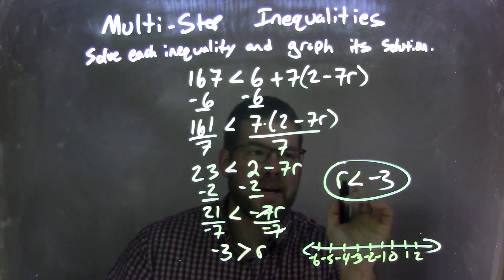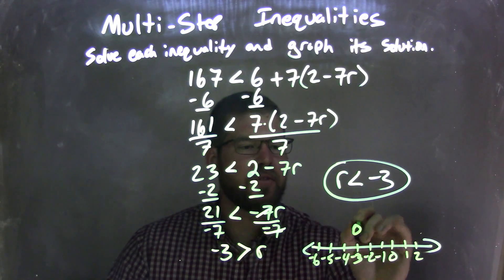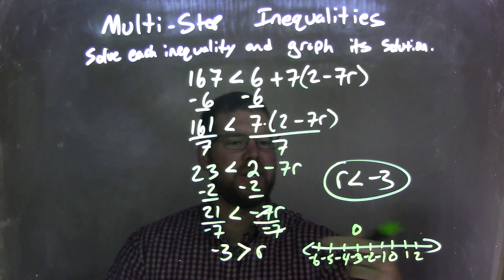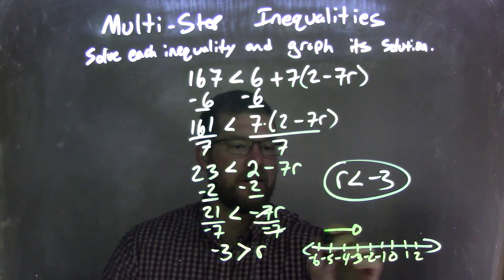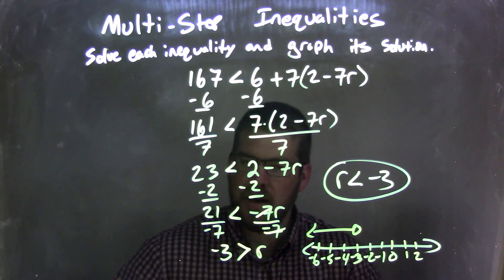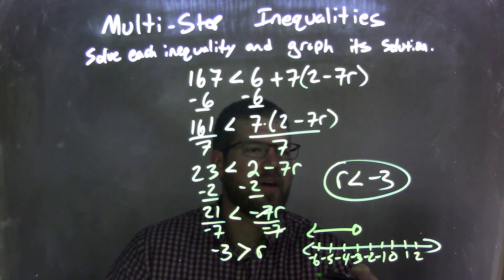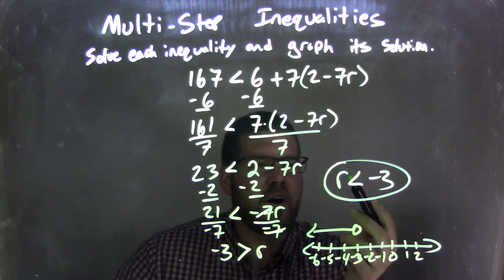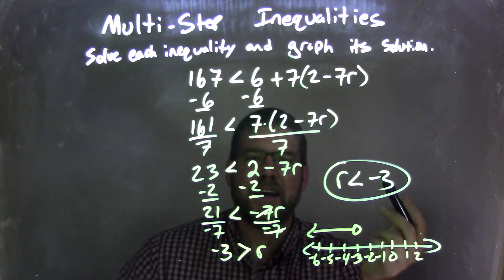If r is less than negative 3, it's not equal to negative 3, so I'm going to put an open circle there at negative 3. Then we shade to the left or put our arrow to the left because r is less than that negative 3. We have a graph here that represents our answer, which is r is less than negative 3.